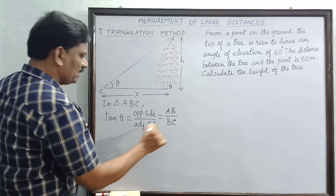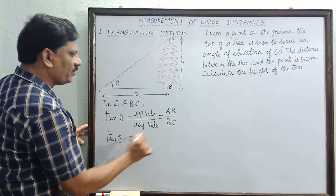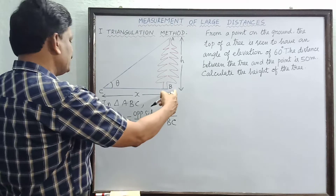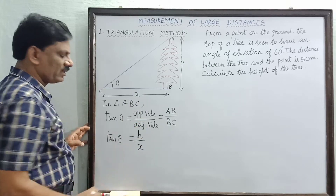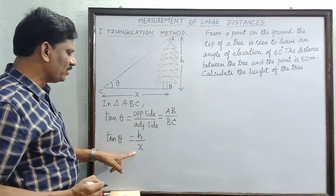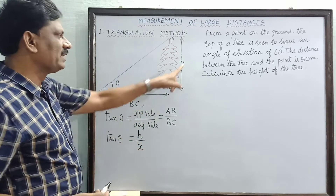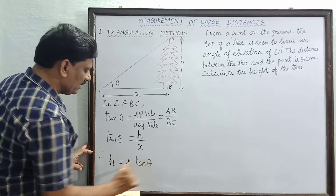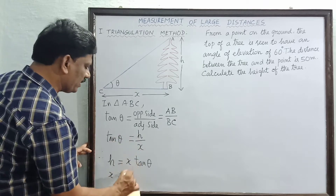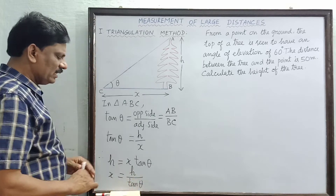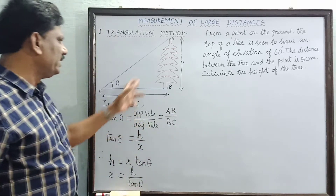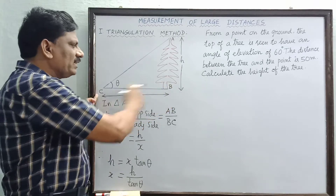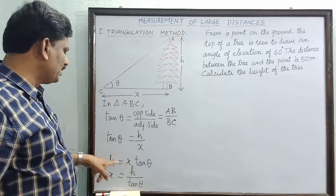Tan theta is equal to AB, which is the height of the tree h, divided by the adjacent side BC, which is equal to x. So h is equal to x times tan theta, and if you want to find the distance x, then x is equal to h divided by tan theta. In this case, theta can be measured by a range finder and x can be measured along the surface of the road, so that h can be determined using h equals x tan theta.